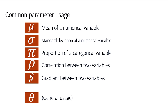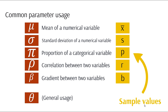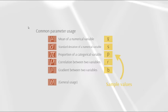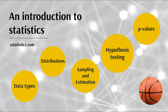Parameters don't have any uncertainty about them — they are fixed, godly figures we merely try to estimate as statisticians. We estimate them by taking a sample. Sample statistics get different symbols: x-bar for the sample mean, s for standard deviation, p for proportion, r for correlation, and b for gradient. Be prepared to see these lowercase Roman letters representing sample values that estimate the Greek parameters — but also be prepared for textbooks to break those conventions.